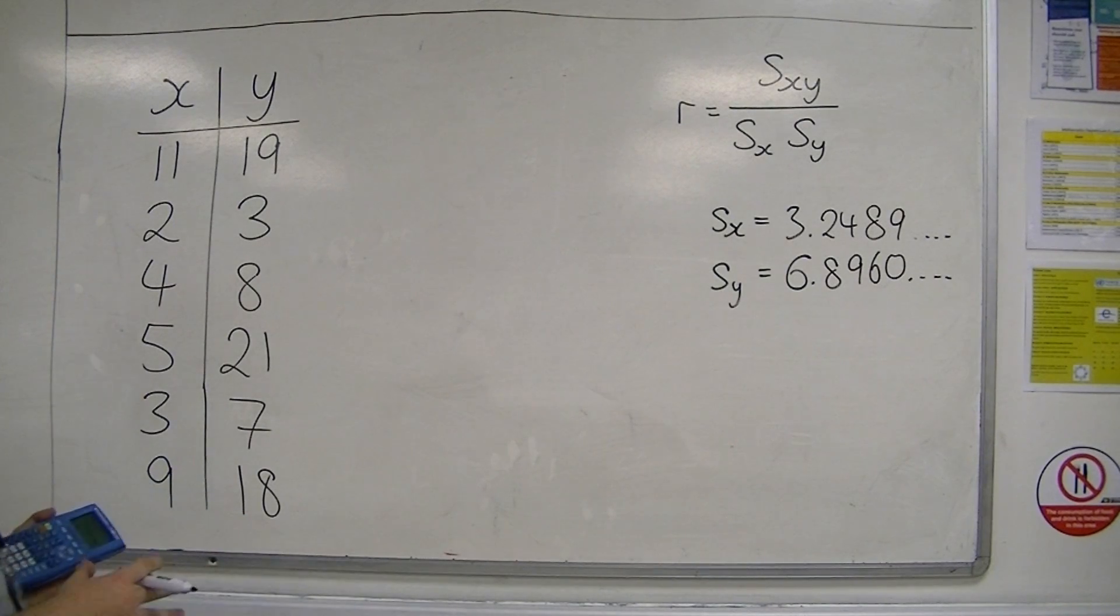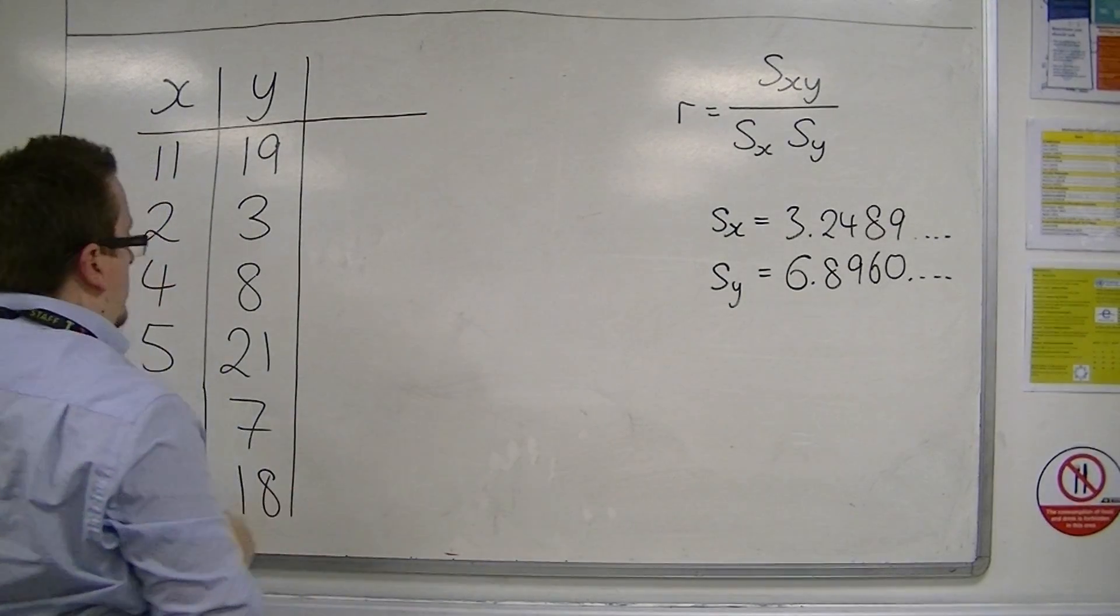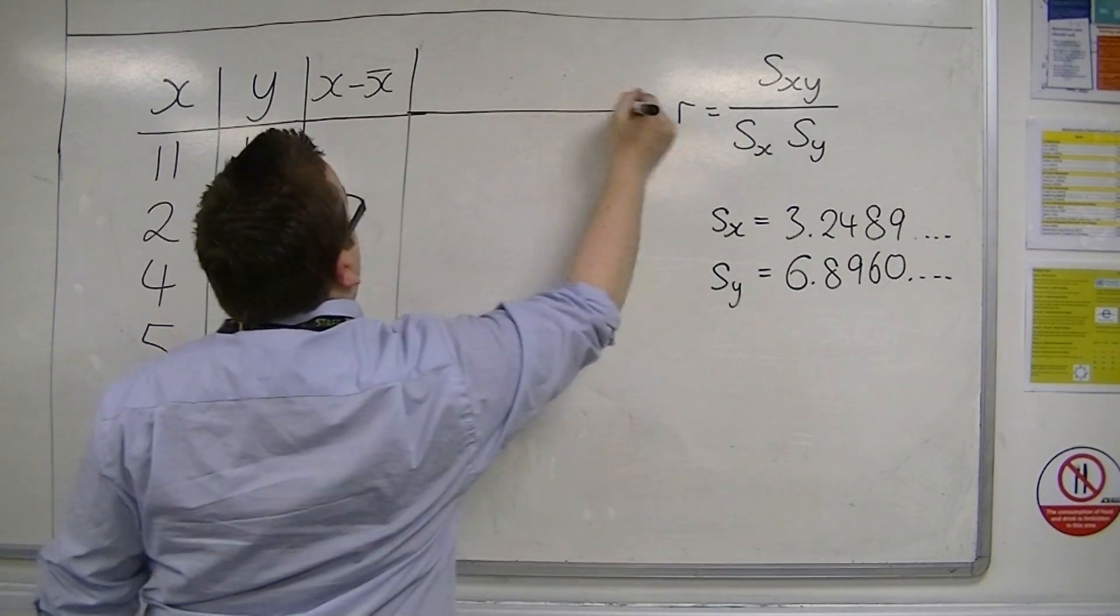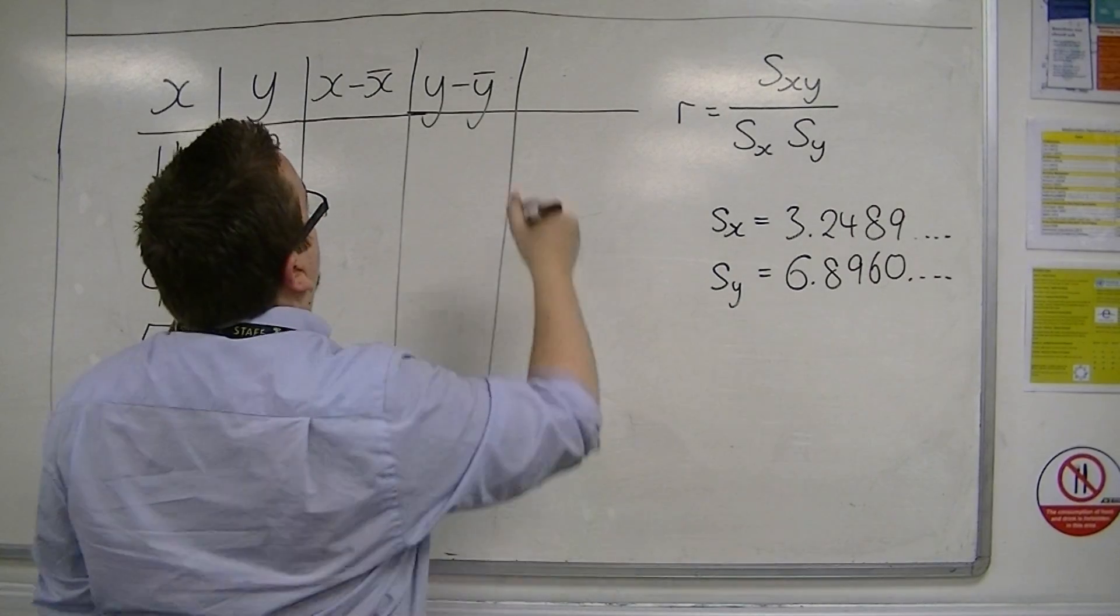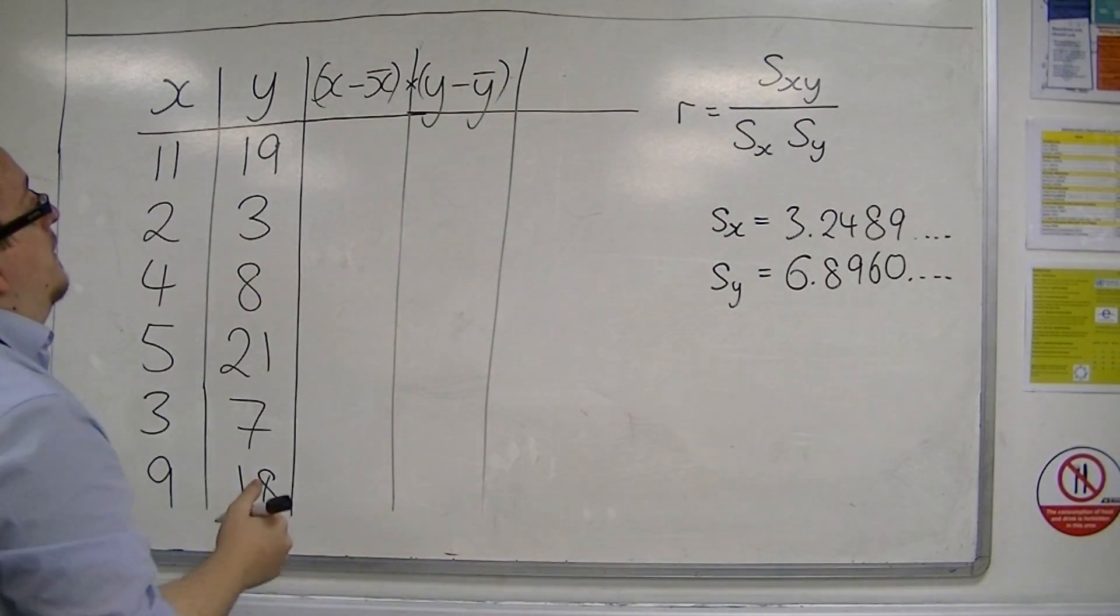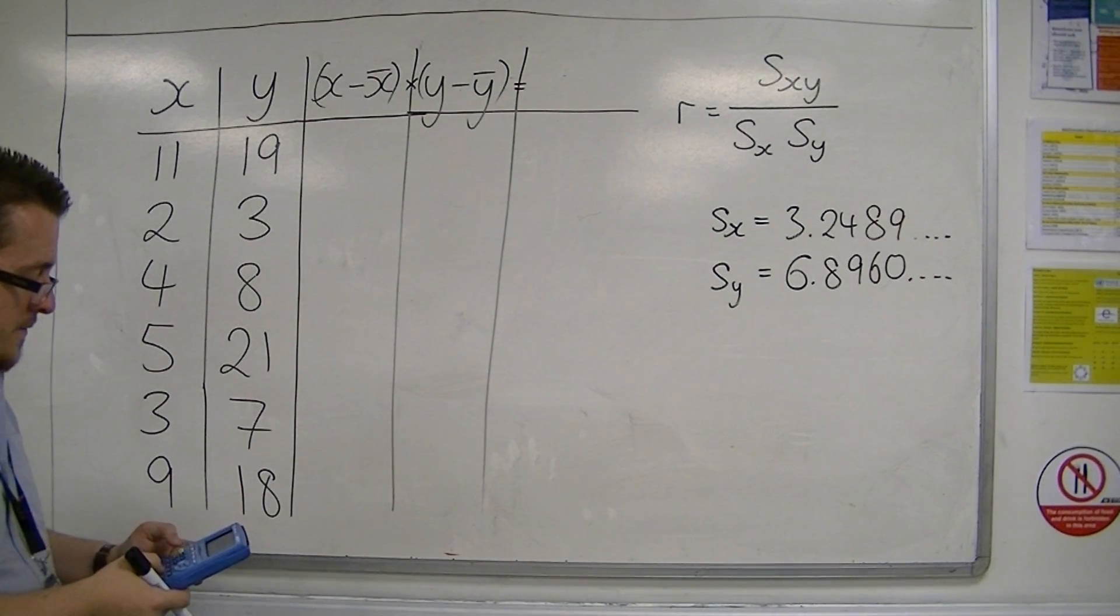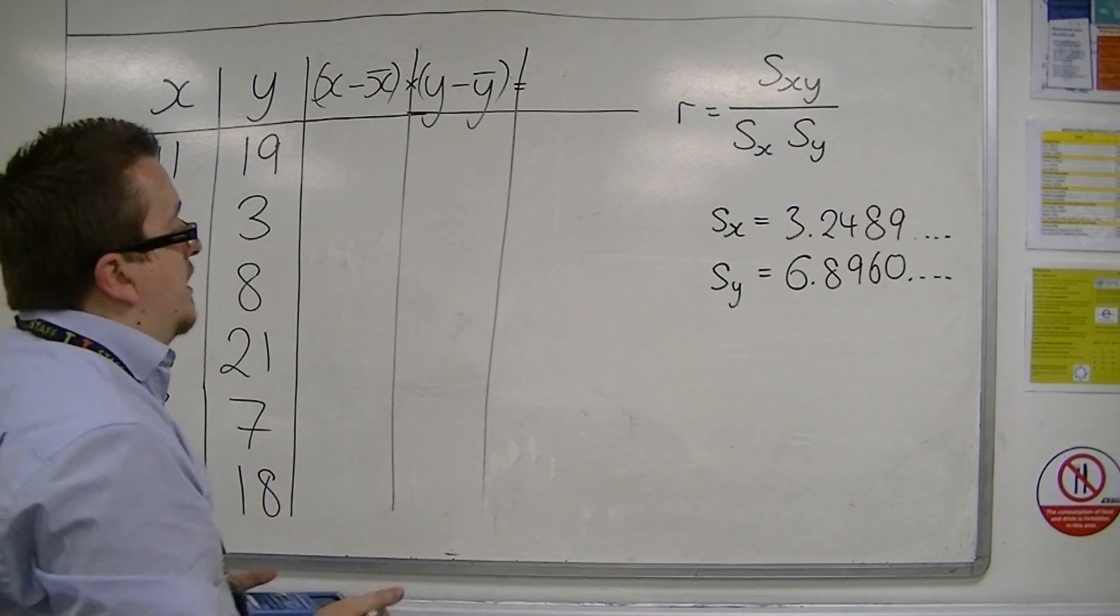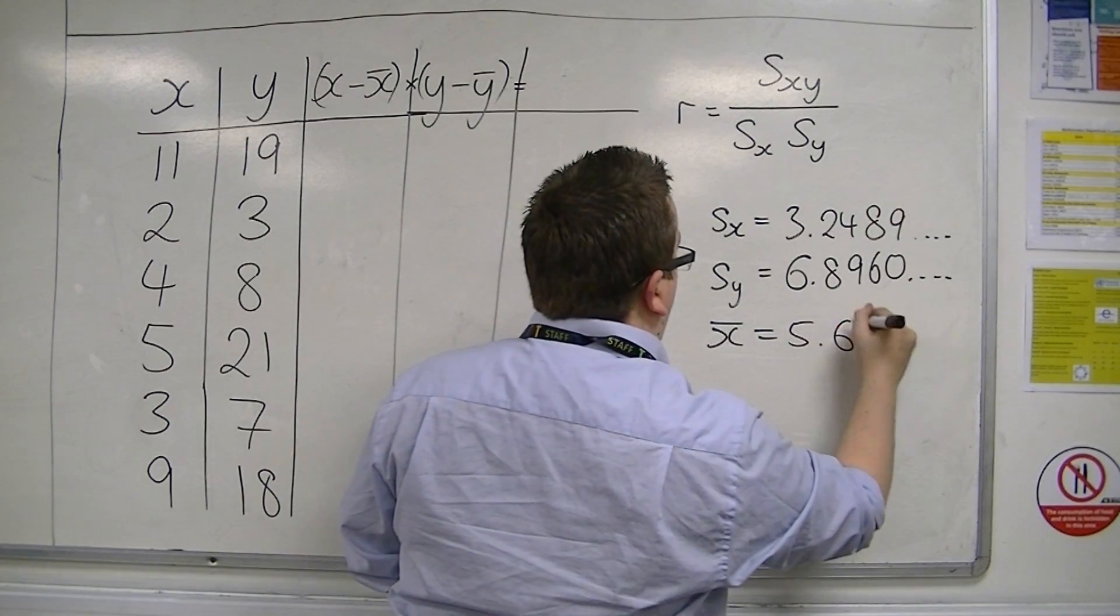So they're my two standard deviations. Now I'm going to show you how to work out S_XY, the covariance. So I'm going to need the mean of the x's, because I'm going to do x minus x̄. I'm going to do y minus ȳ, so I'm going to have to have the mean of the y's, then I'm going to have to have these two multiplied together to get me this column. So first of all, the mean of the x values is 5.6 recurring, so x̄ is 5.6 recurring.